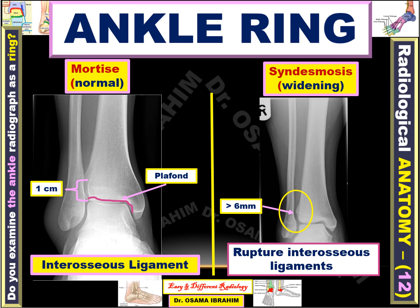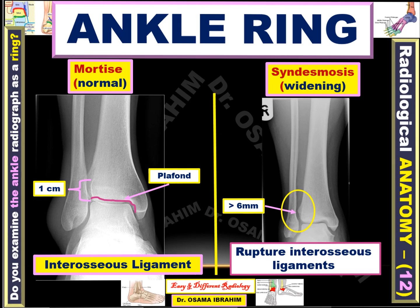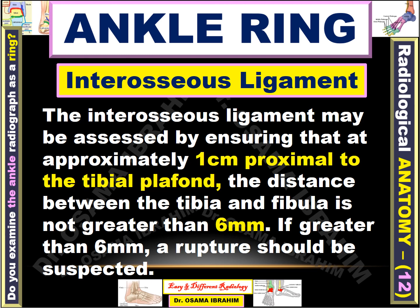Sometimes it is called syndesmosis widening, representing rupture of the interosseous ligament. This is the abnormal image, while this side is the normal mortise image. The interosseous ligament may be assessed by ensuring that at approximately one centimeter proximal to the tibial plafond, the distance between the tibia and fibula is not greater than six millimeters. If greater than six millimeters, rupture of the interosseous ligament should be suspected.